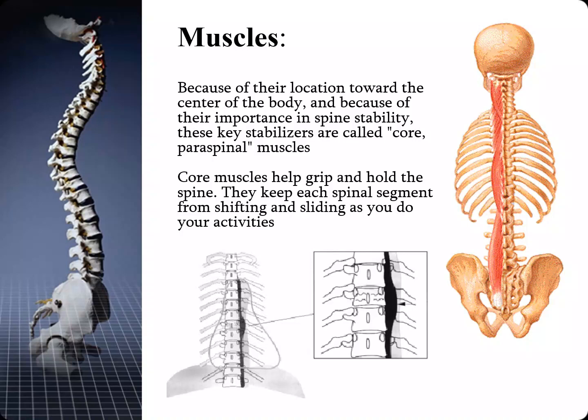Because of their location towards the center of the body and their importance in spine stability, these key stabilizers are called core paraspinal muscles. They are easy to discern on x-ray, and for trauma, if you can see that there is a displacement of the paraspinal stripe, you know — even though you can't see the fracture in the thoracic area — that you have a thoracic fracture.